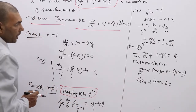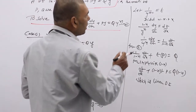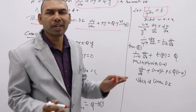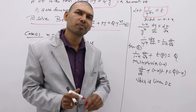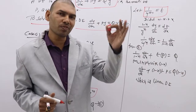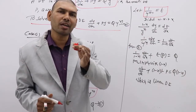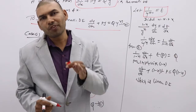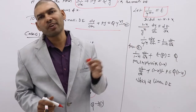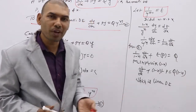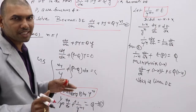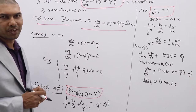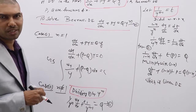To summarize: divide by y^N and take 1/y^(N-1) as T, and the rest follows automatically. If RHS has y squared, divide by y squared and assume 1/y as T. If RHS has y cubed, divide by y cubed and assume 1/y squared as T. That is the only technique you need to remember to solve a Bernoulli differential equation.